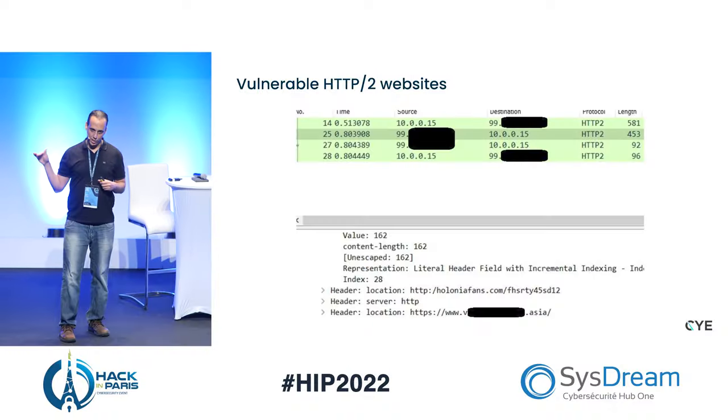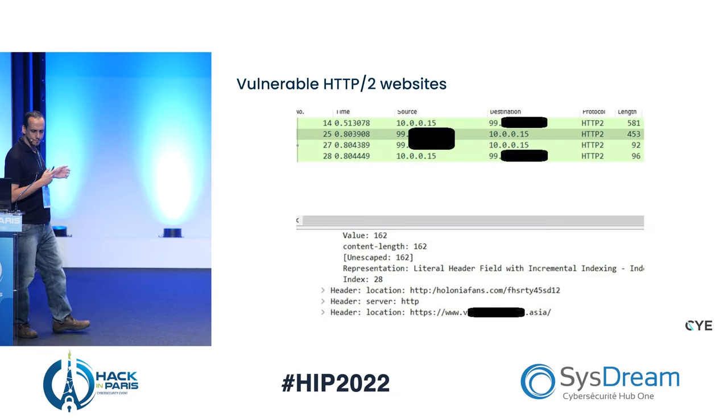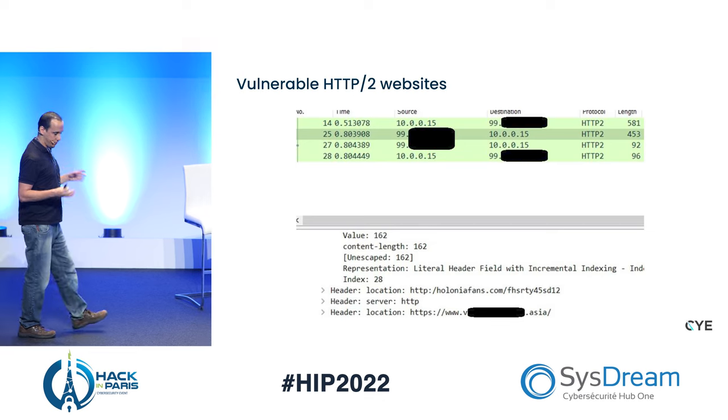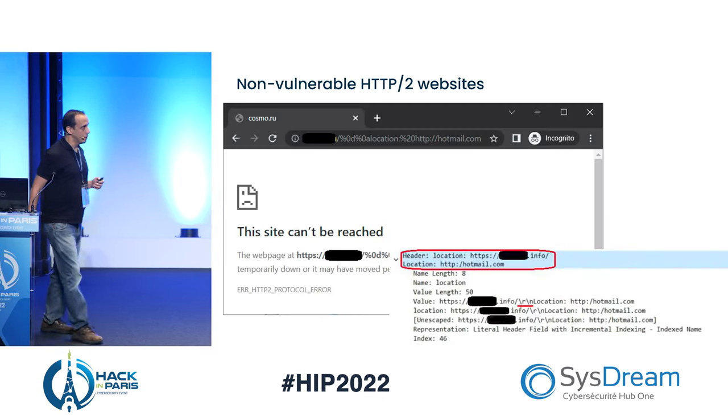The perfect storm is: a client that uses Chromium, a server that supports HTTP 2, and a server that is vulnerable to CRLF injection. As the validation occurs after the redirection, CRLF injection enables us to return two location headers. But there is one additional condition: the injected value of our location needs to be the first one, because the browser — although you don't get an error with HTTP 2 — follows the first location header.